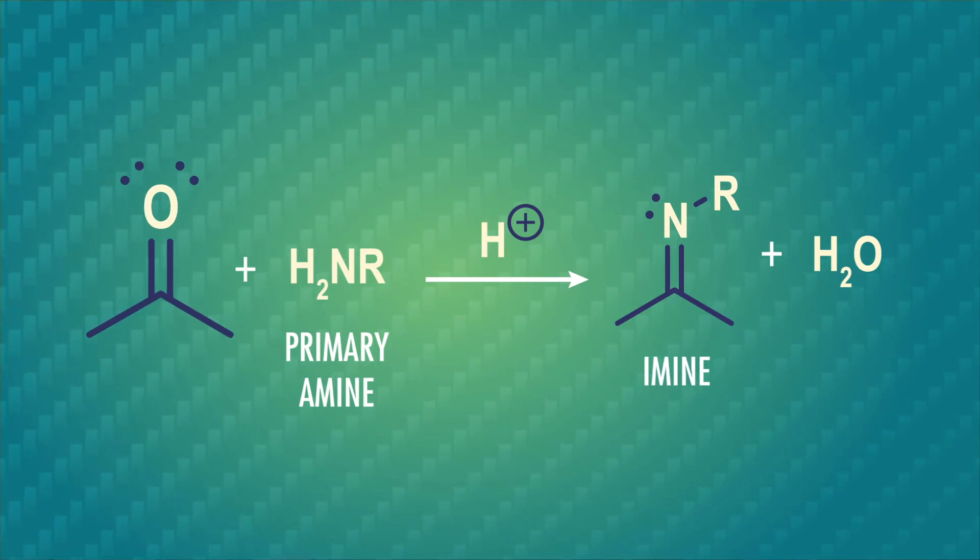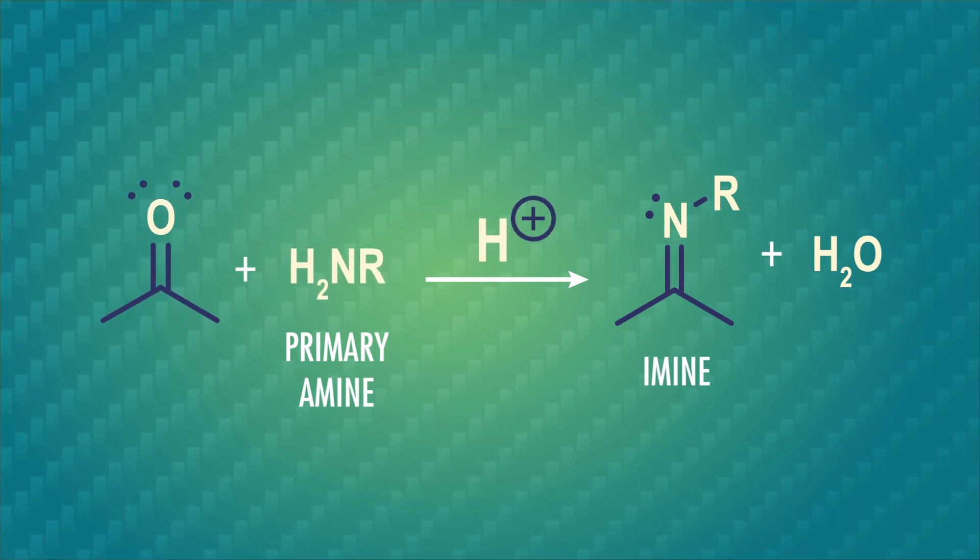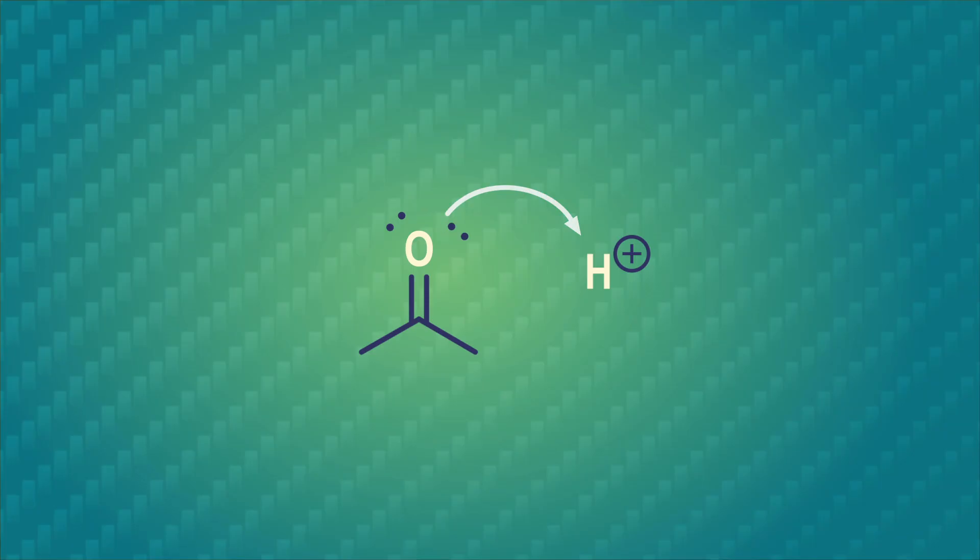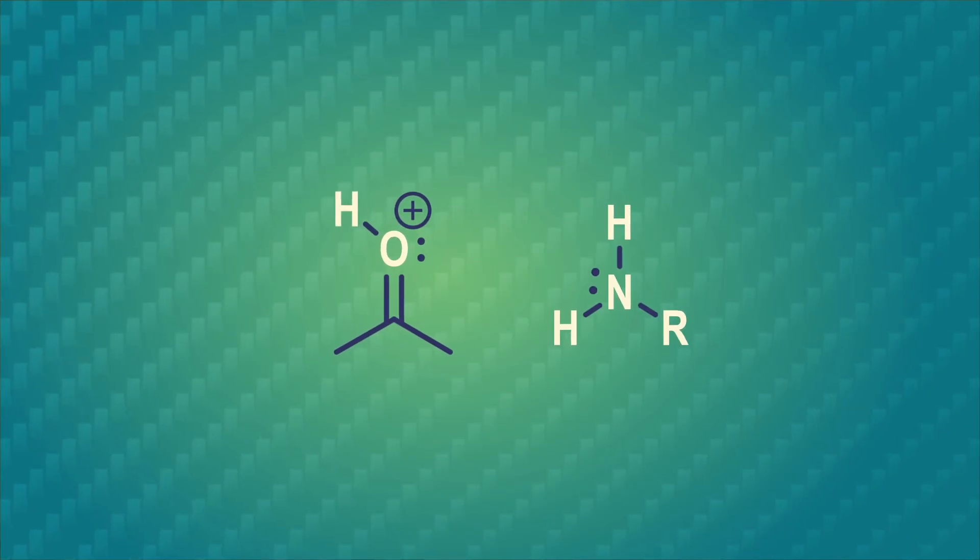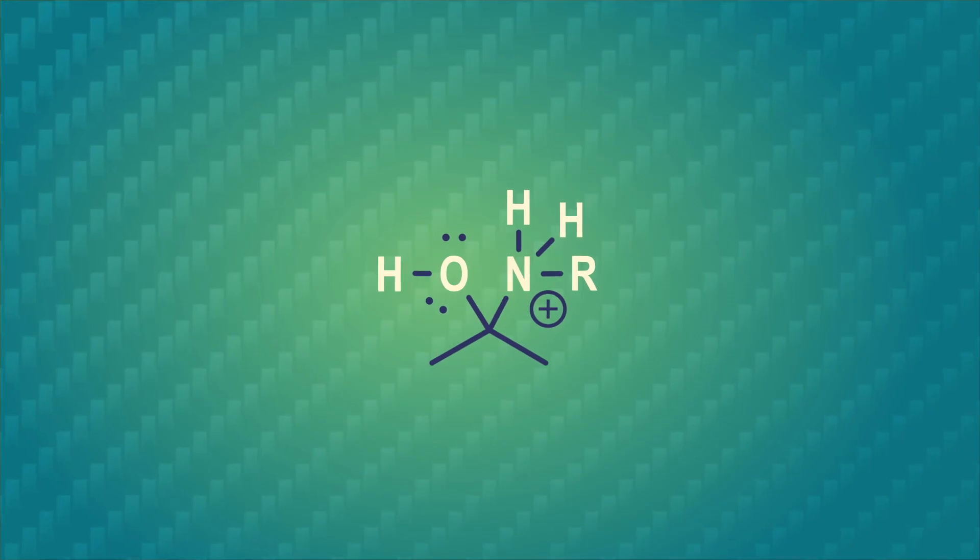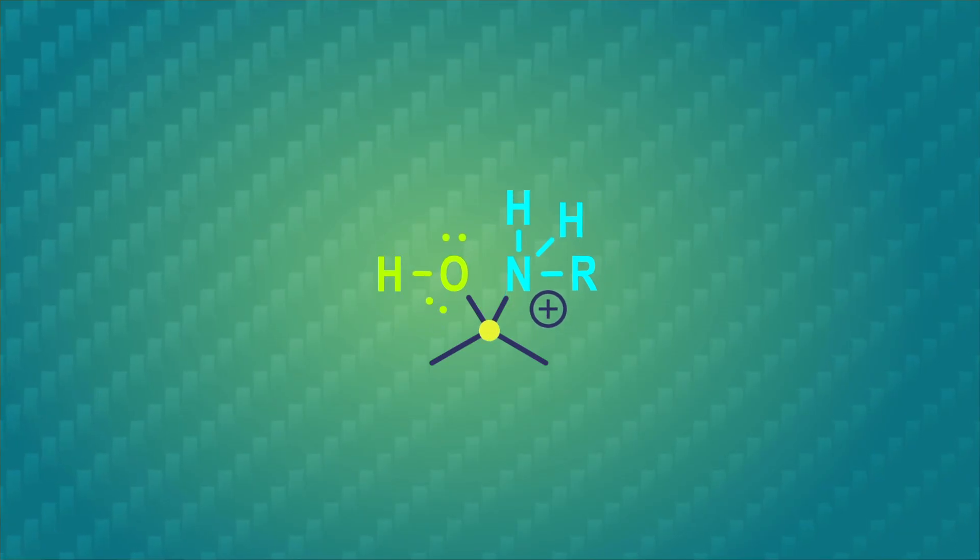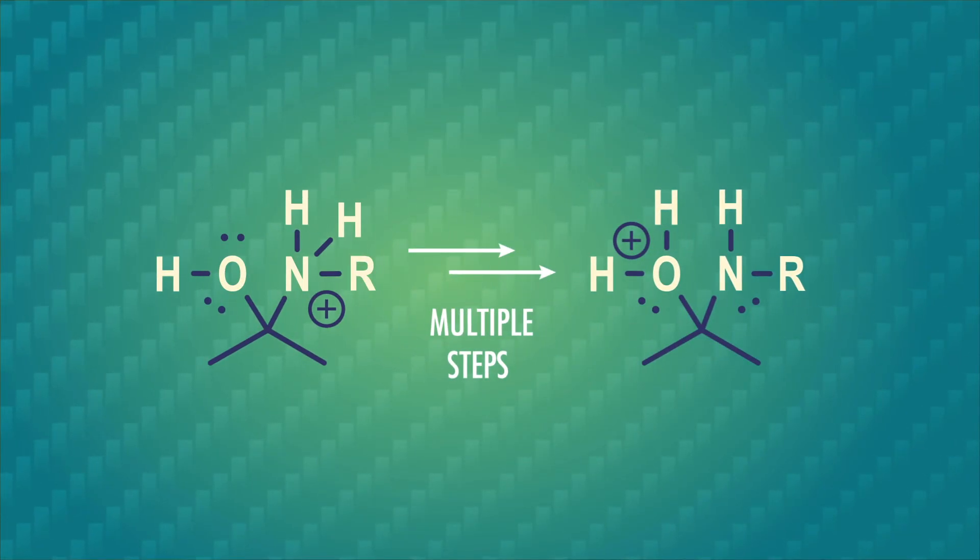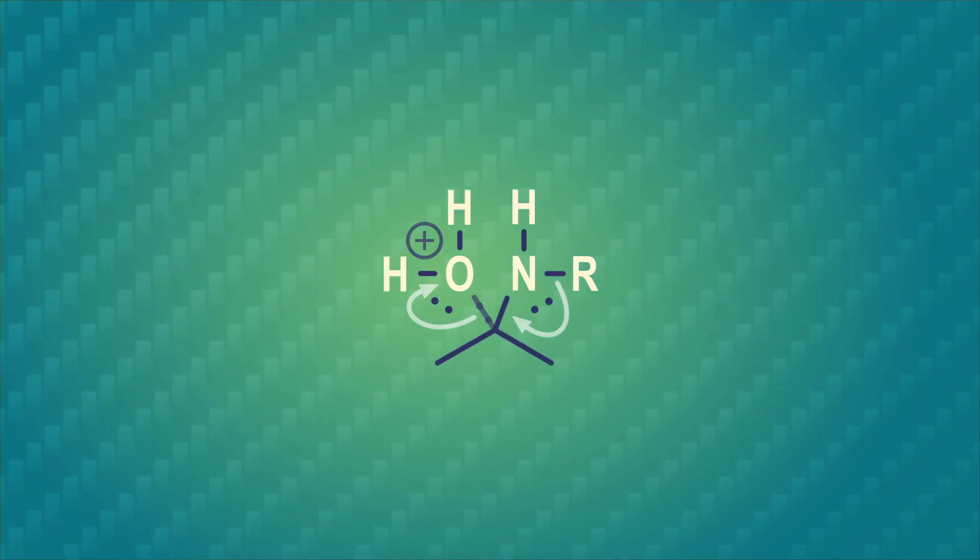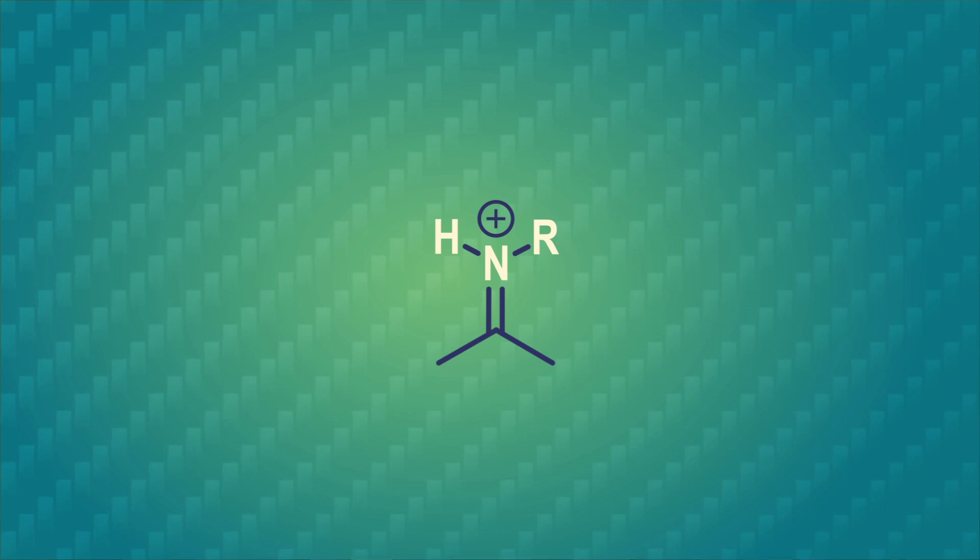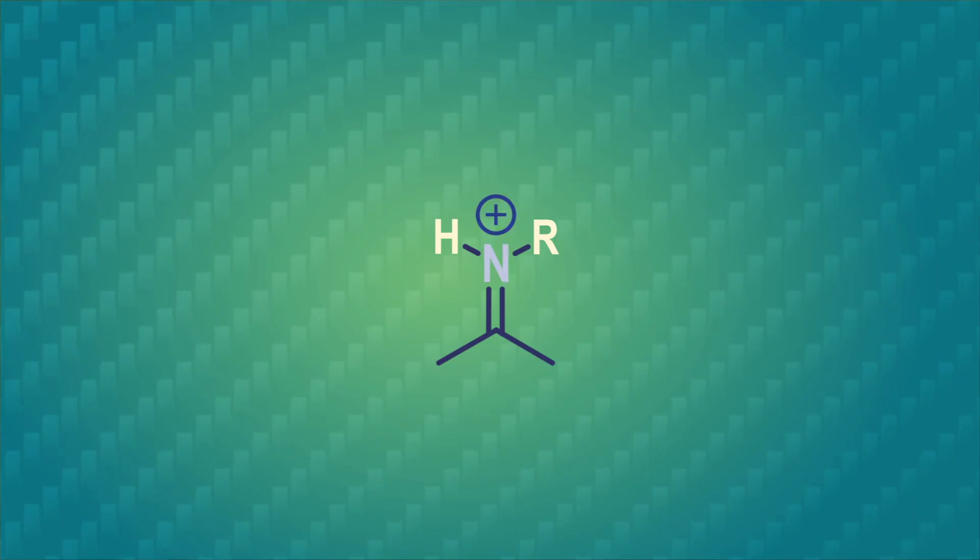The mechanism for imine formation is similar to acetal formation, with three main players: a carbonyl group, a primary amine, and acidic conditions. Once again, there's a lone pair on the carbonyl oxygen that can grab a proton. Then the nucleophile, which is the nitrogen in the amine this time, can attack the carbon atom of the protonated carbonyl group. The pi electrons in the carbon-oxygen double bond neutralize the oxonium ion, and our intermediate molecule has an amine and an OH on what was a carbonyl carbon. As in acetal formation, oxygen gets protonated, the nitrogen lone pair forms a carbon-nitrogen double bond, and water is eliminated. That leaves us with an aminium ion, which is any molecule with a positive charge on the double bond in nitrogen. After a deprotonation, we get an imine.